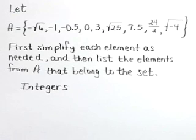Let A equal the set of numbers: negative square root of 6, negative 1, negative 0.5, 0, 3, the square root of 25, 7.5, 24 halves, and the square root of negative 4.